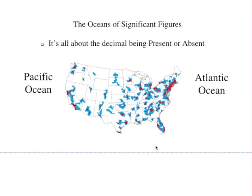In math class, you may round to the tenth or hundredth. But in science, we round using significant figures. In a textbook, it's really tricky and confusing to understand this. There's an easy way to do this, and it has to do with the decimal being present or absent in a number. If it's present, we associate that with the Pacific Ocean being on the left. If it's absent, we start counting on the right side and associate absent — A for Atlantic Ocean.